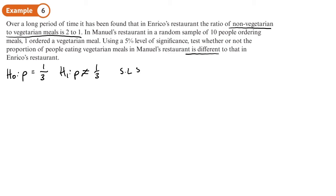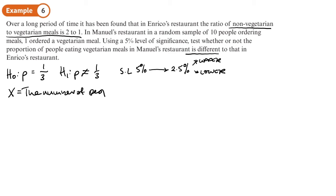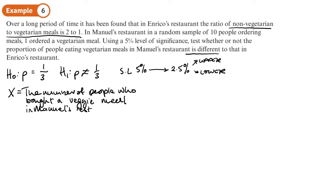The significance level is 5%, but it gets split in half because it's a two-tail test, so our cutoff at each end — whether upper or lower, which we'll decide in a moment — is 2.5%. We also define what X stands for: X is the number of people who bought a vegetarian meal in Manuel's restaurant.